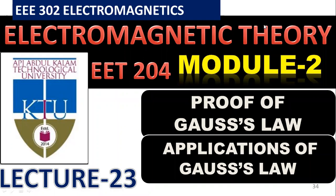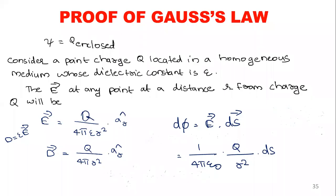In today's class we will study the proof of Gauss's law. Last class we understood what Gauss's law is — that the total flux is equal to the total charge enclosed. We will prove it mathematically, since that can also come for your exam. Then we will see the application of Gauss's law — how we calculate the electric field intensity for a point charge, surface charge, volume charge, and so on.